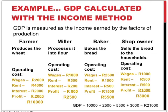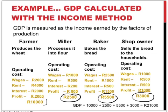The alternative approach is to look at the incomes earned by the factors of production in the different steps of the production process. So in this case, it's not value added but factor incomes that are summed. The farmer pays wages, rent, interest, and profit to the value of 10,000 rands — the same as the value added in this step. Similarly, the miller pays the factors of production a total of 2,500 rands; the baker pays 5,500 and the shop owner pays 3,000 rands to the different factors of production used in their step of the production process. This all adds up to a total of 21,000 rands.